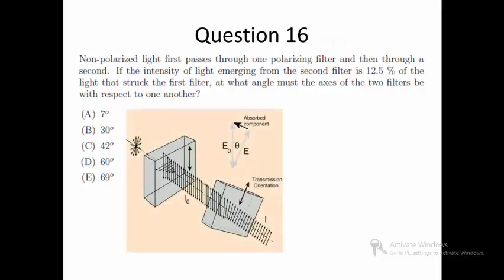In polarization of light, the filter will only allow the component of light with certain oscillation orientation to pass through. During the process, the amplitude of the outcoming light is reduced with a factor of cosine theta, where theta is the angle between the axis of the incoming light and the polarizing filter.